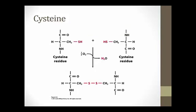Cysteine is commonly used to form covalent disulfide bridges through an oxidation-reduction reaction, which can stabilize tertiary or quaternary protein structures by securing various amino acid segments together in three-dimensional space — segments that may be far from each other in the primary sequence.